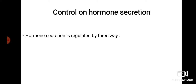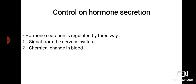Hormone secretion is regulated by three ways. First is signals from the nervous system — for example, nerve impulses of the adrenal medulla regulate the release of epinephrine. Second is chemical changes in the blood — for example, when blood calcium level decreases, parathyroid hormone secretion increases.